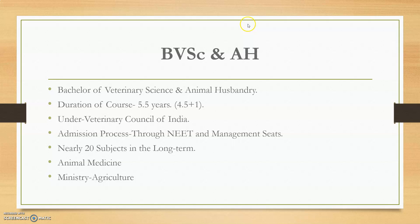The next course is BVSc&AH, known as veterinary science — Bachelor of Veterinary Science and Animal Husbandry. The duration of the course is also 5.5 years: 4.5 years in college and one year of compulsory, rotatory, regular internship service. The mandatory regulatory body is the Veterinary Council of India (VCI).